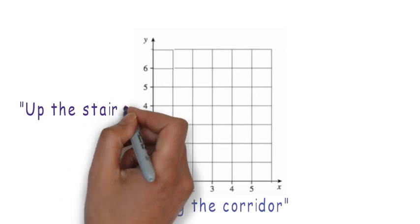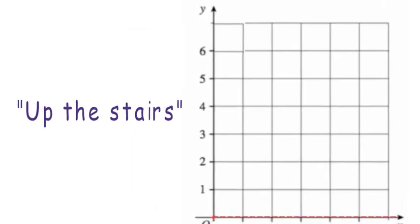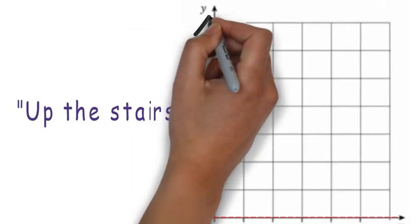This is a set of axes. The horizontal line is called the x-axis. The vertical line is called the y-axis.